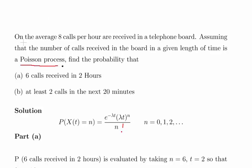Okay, in this presentation we're going to look at the Poisson distribution. On average, eight calls per hour are received in a telephone board.